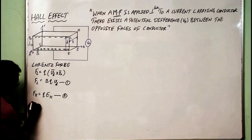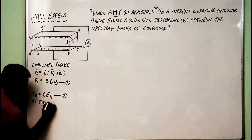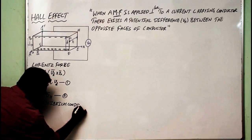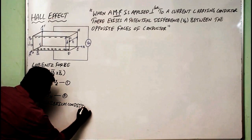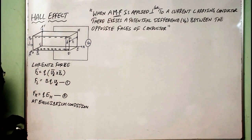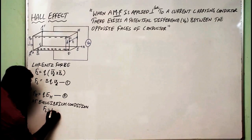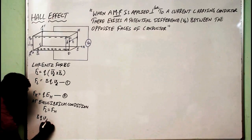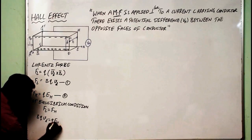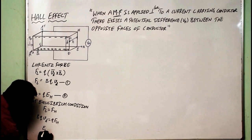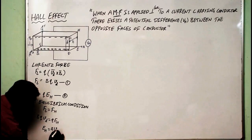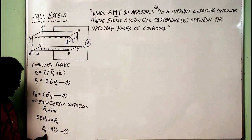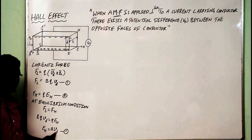At equilibrium condition, all forces are equal: F_L equals F_H. So B·Q·V_D equals Q·E_H. Q cancels on both sides, and E_H can be written as B·V_D. Call this equation 1. Here E_H is the Hall electric field, B is the applied magnetic field, and V_D is the drift velocity.